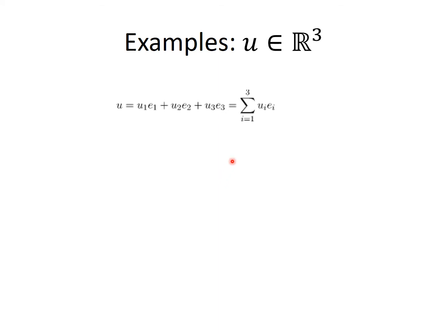It can also be written as the sum of uᵢeᵢ where i goes from 1 to 3. If we adopt Einstein's Summation Convention, we can drop the sum sign, and we can briefly write u as equal to uᵢeᵢ.